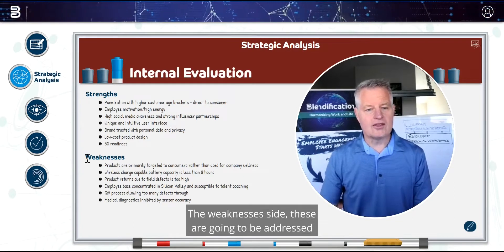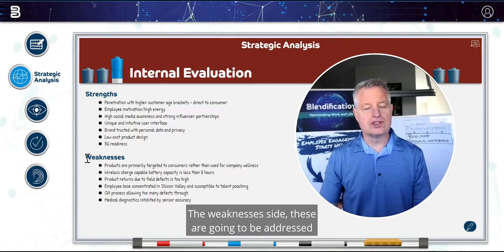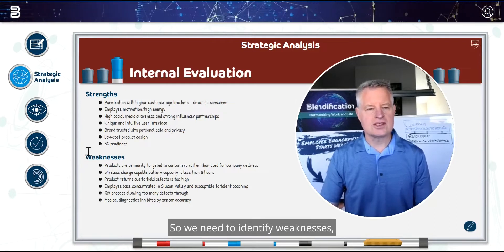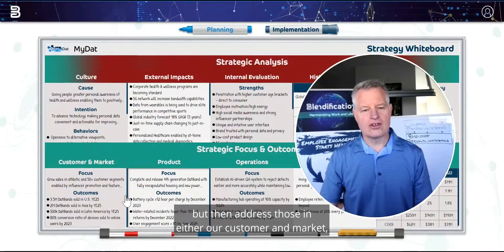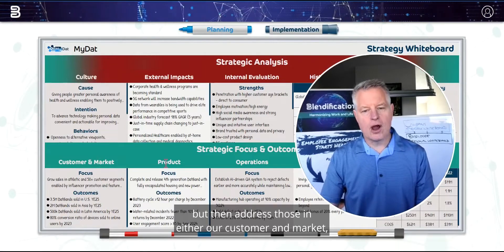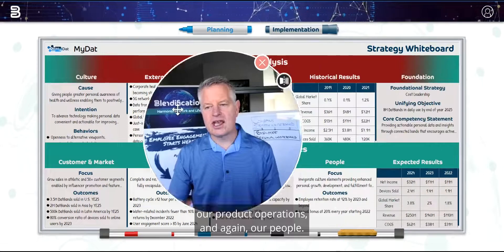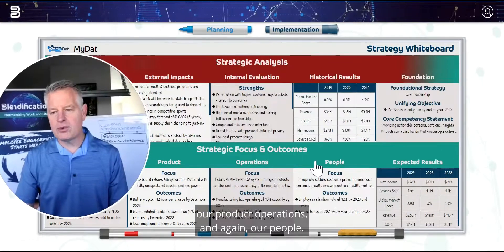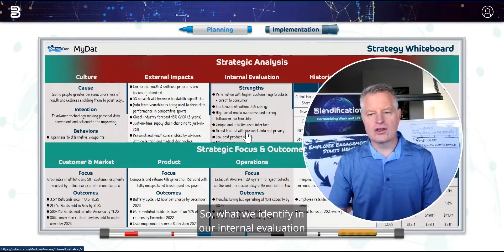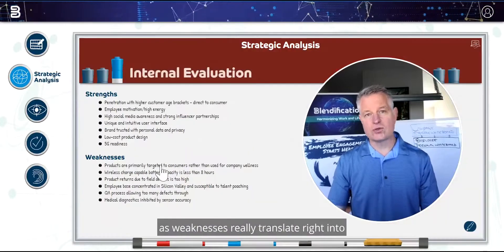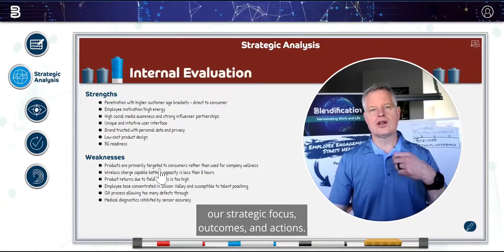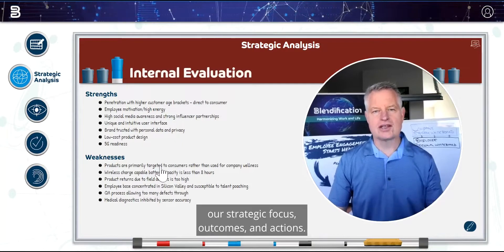The weaknesses side — these are going to be addressed in the strategic direction. So we need to identify weaknesses, but then address those in either our customer and market, our product, operations, and our people. What we identify in our internal evaluation as weaknesses really translate right into our strategic focus, outcomes, and actions.